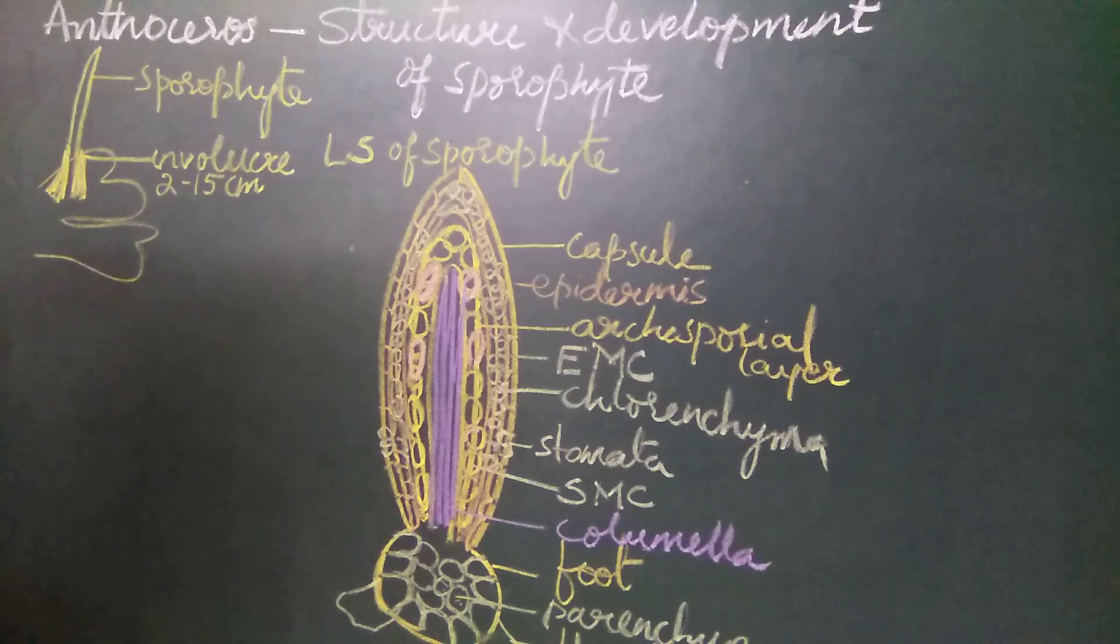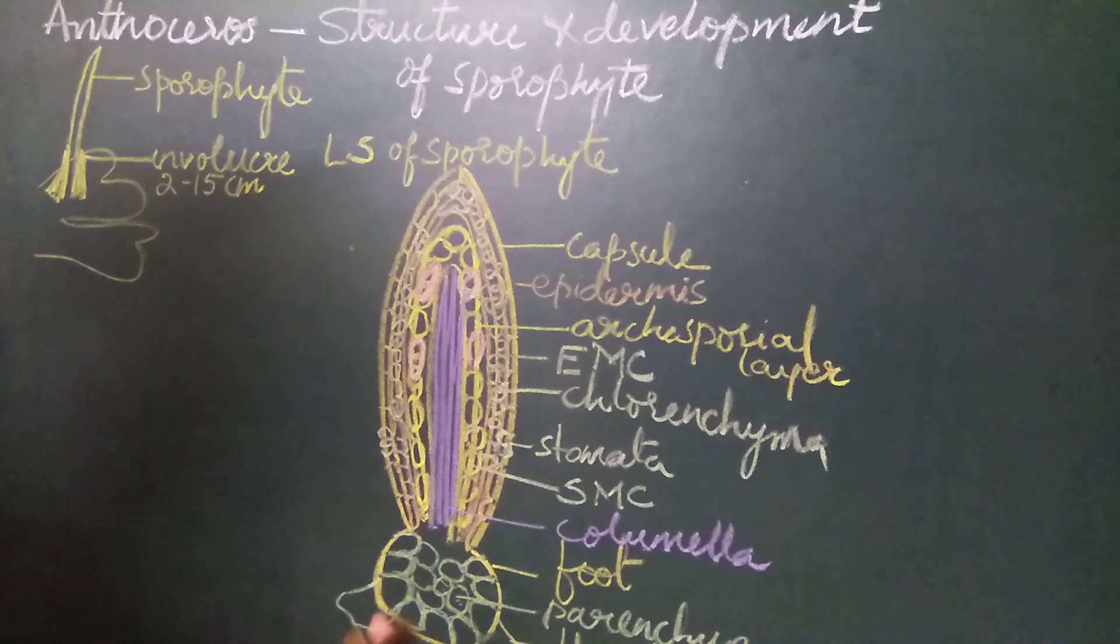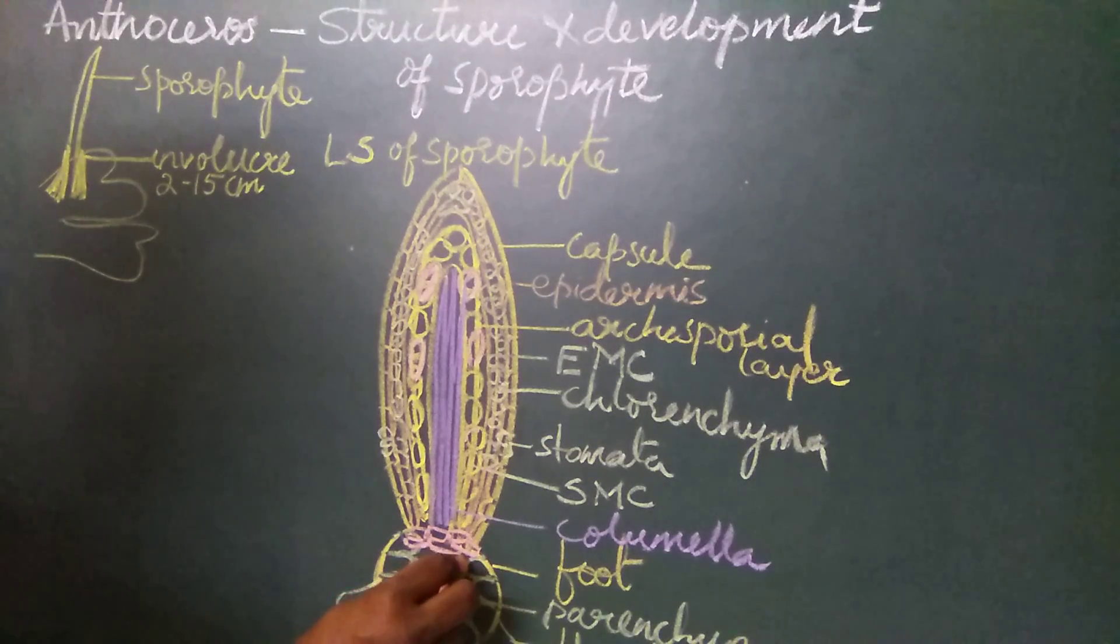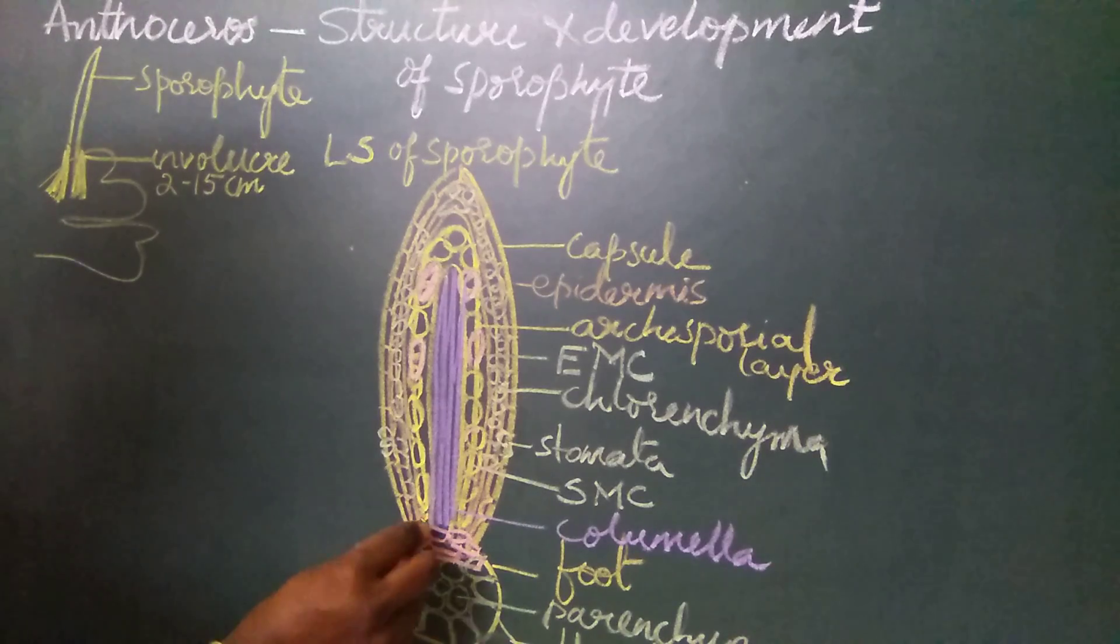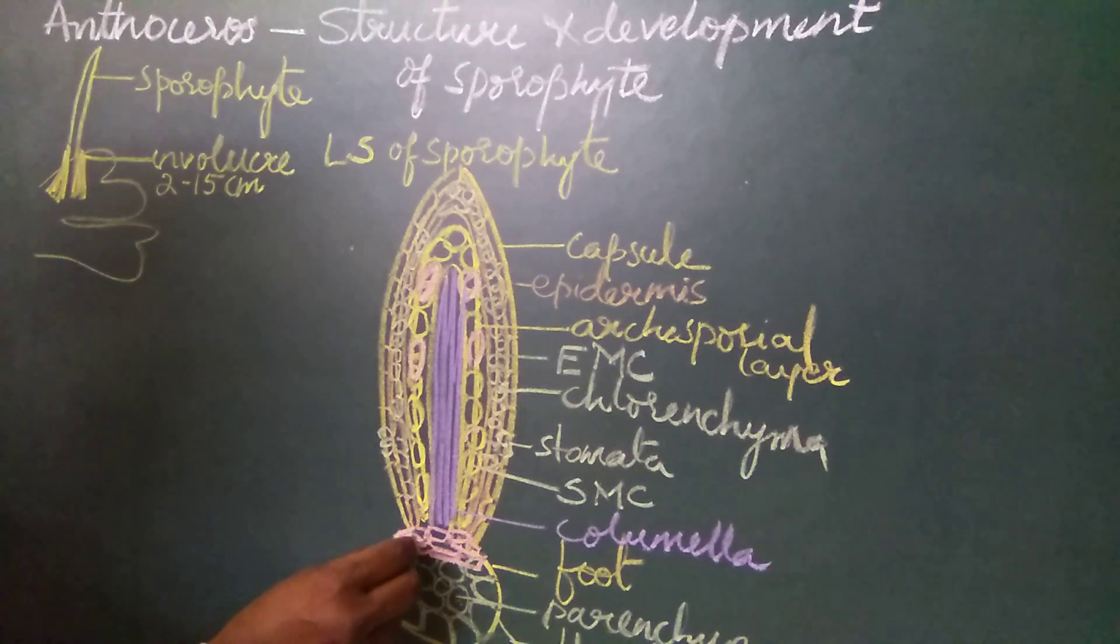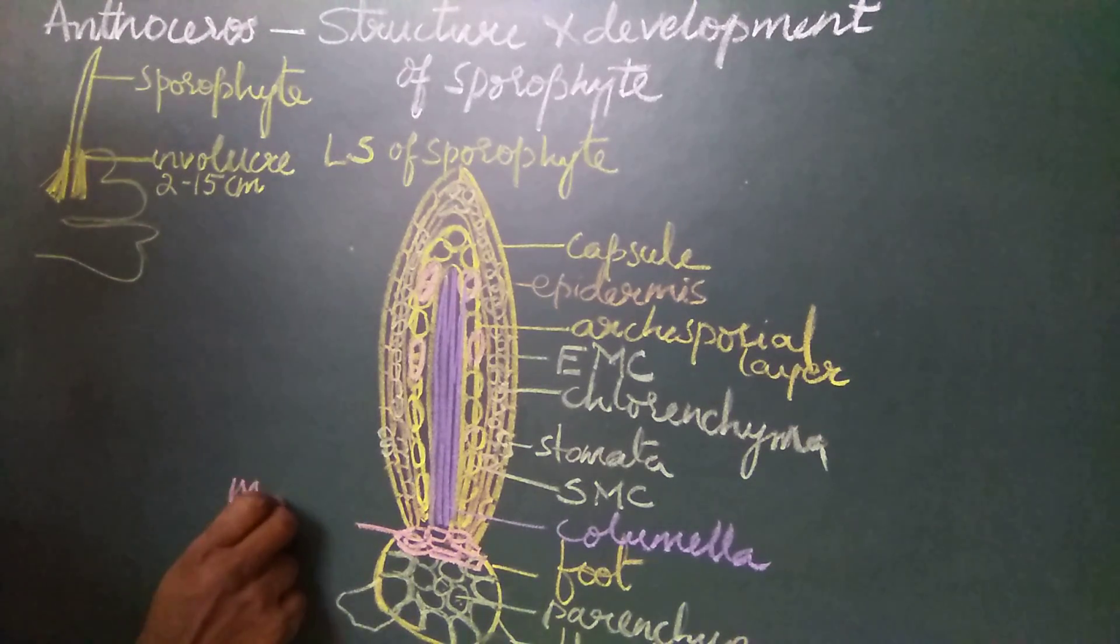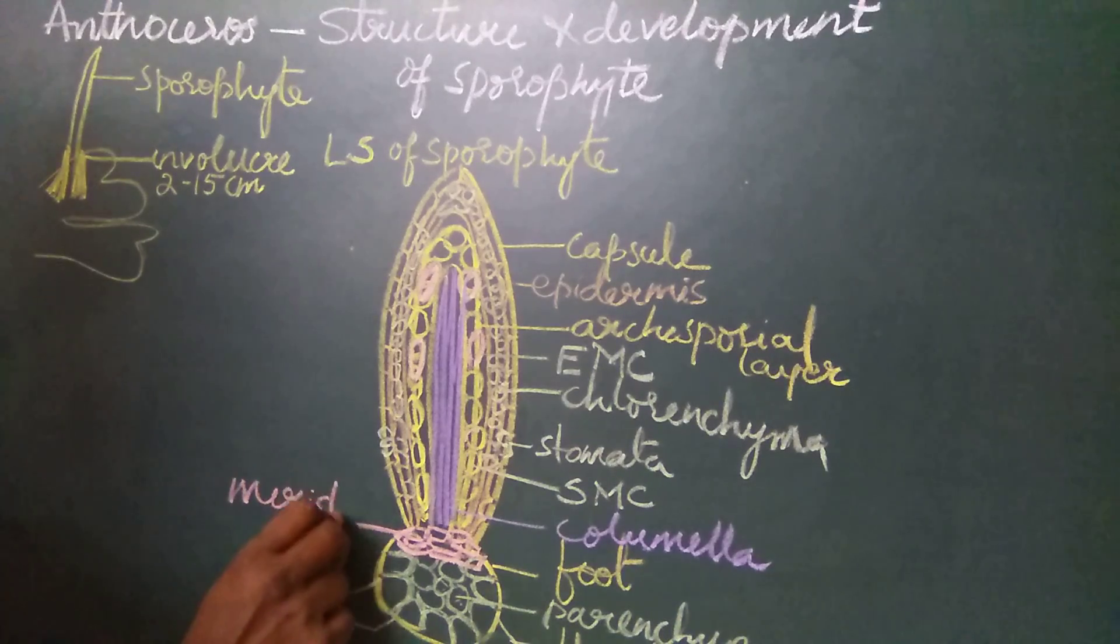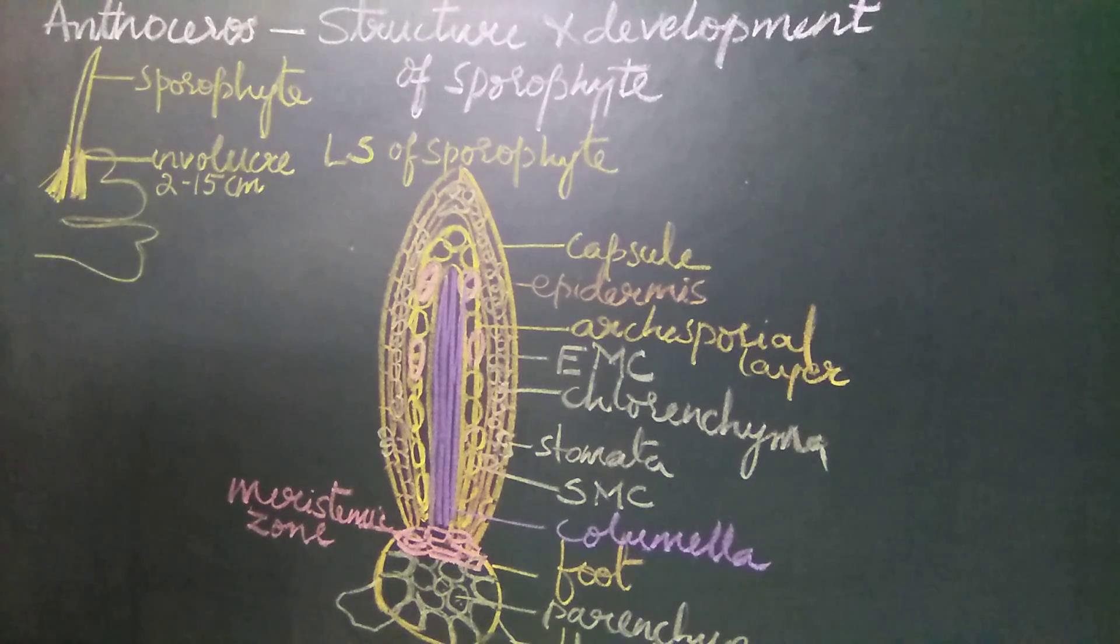At the junction of the capsule and the foot, we find 2 to 3 layers of cells. These layers are meristematic in nature, and this zone forms the meristematic region. The presence of meristematic zone is of evolutionary significance in Anthoceros plants.